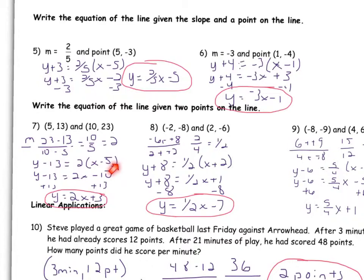You certainly, and I'll do it up here, you certainly could have plugged y in and x into the y slope intercept form. So 13 equals 2 times 5 plus b, and then solved for b and plugged it back in. But this allows me to get the equation without having to do too much work.